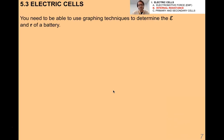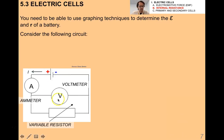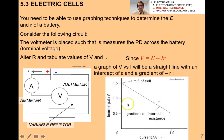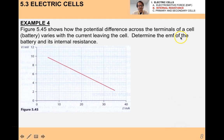You need to be able to use graphing techniques to determine the EMF and internal resistance of a battery. Consider a circuit with a voltmeter connected in parallel with the battery and a variable resistor. If we alter R and tabulate values of V and I and make a graph, we get a straight line with a negative slope. Since V = ε − Ir, this is of the form y = mx + b, and the gradient would be negative r, because I is the independent variable.